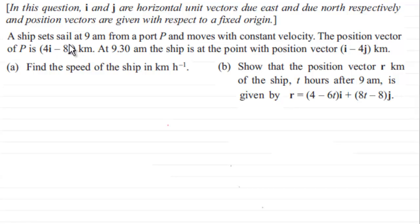A ship sets sail at 9am from a port P and moves with constant velocity. The position vector of P is 4i - 8j kilometers. And at 9:30am the ship is at a point with position vector i - 4j kilometers. And what we've got to do in part A is find the speed of the ship in kilometers per hour. And then in part B we've got to show that the position vector r kilometers of the ship t hours after 9am is given by r equals 4 - 6t i plus 8t - 8 j.